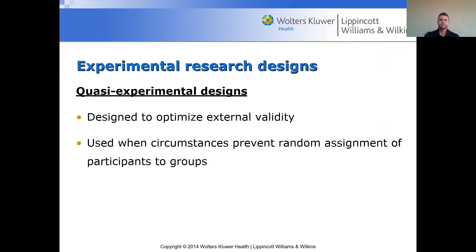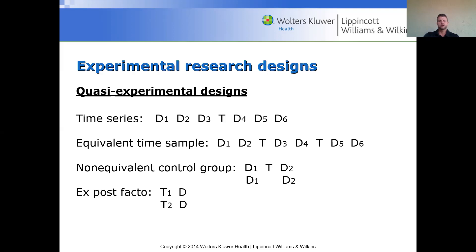Quasi-experimental designs are used when circumstances prevent random assignment of participants to groups and are designed to optimize external validity. Options include time series designs — testing on day one, two, three, then testing on day four, five, six — equivalent time samples, where you test on day two, then day four, then day six; and non-equivalent control groups, where two groups go through days one and two and then are tested on day three. We'll go into these in more detail in later chapters.